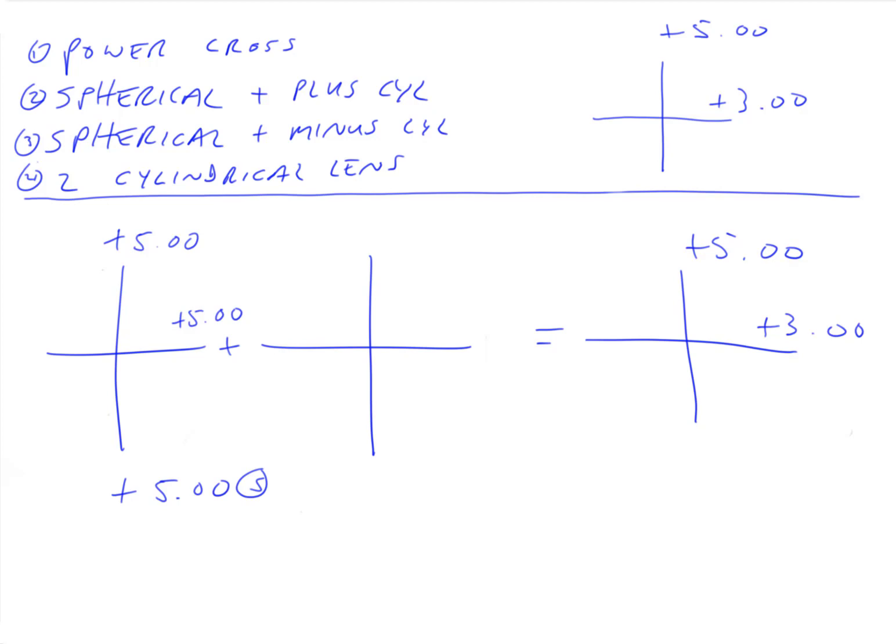So what's our minus cylinder? Well, what do we need to add to plus five to get plus five? And the answer is nothing, plano. And then what do we need to add to plus five to get plus three? And what we need to add to it is minus two. Plus five plus minus two equals plus three.